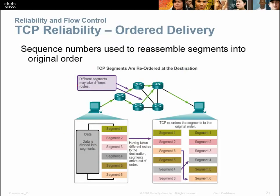The sequence numbers are used to reassemble the segments into the original order. Different segments may take different routes — some segments may go one route, and others get routed a different way due to congestion. For example, packets 1 through 10 go one way, packets 11 through 25 get routed another way, and packets 26 through 50 go back the original way. The sequence number is what allows them to be put back in order — TCP reorders the segments to the original order.